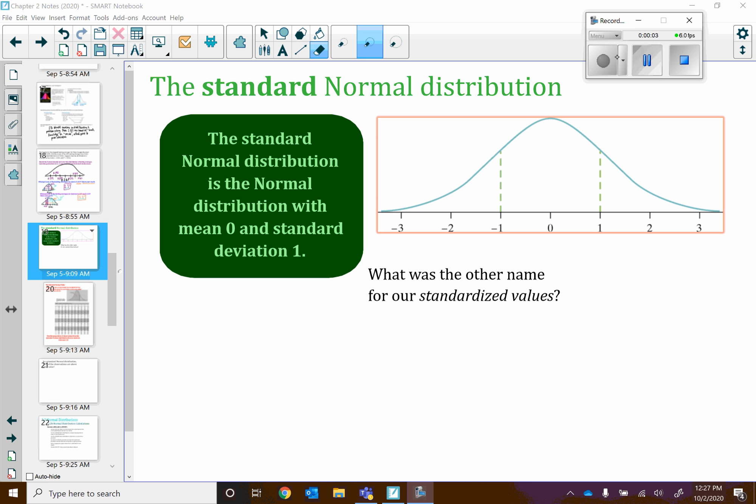Hi AP Stats! We are going to finish 2.2a notes. We're going to finish with this last definition of the standard normal distribution. So we know that a normal distribution is a bell-shaped curve that's centered around the mean and has about three standard deviations above and below. The standard normal distribution is a specific type of normal distribution. Specifically, the standard normal distribution is a normal distribution that has a mean of 0 and a standard deviation of 1.